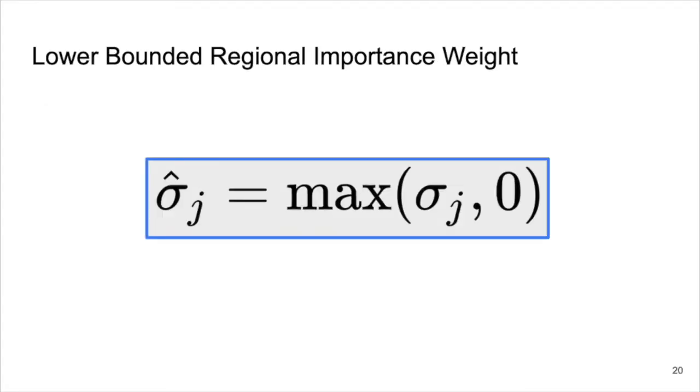For use in a controller, we are concerned with pushing robots in cells with too many robots into cells with not enough robots. So, we want a measure of whether a ground robot should stay in its aerial Voronoi cell or leave. We can start to do this by lower bounding the regional weight sigma by zero. We define sigma j hat as the maximum between sigma j and zero.